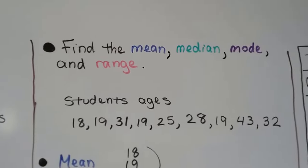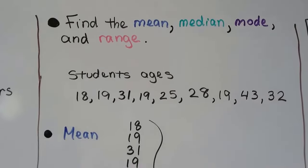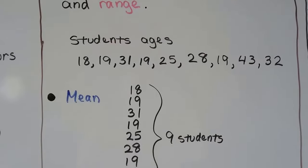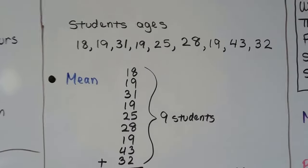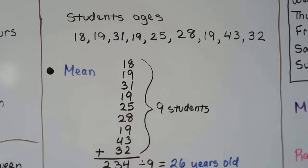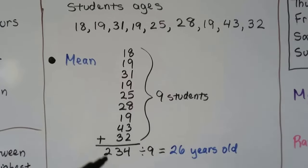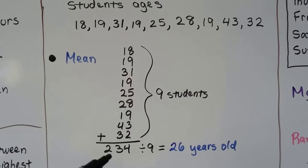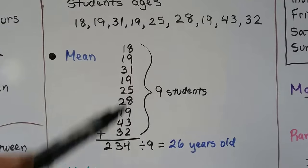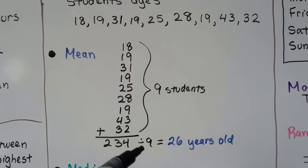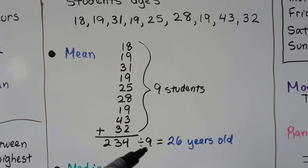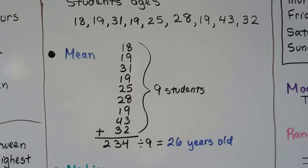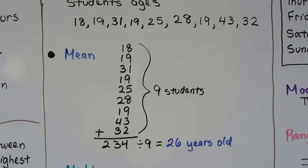Find the mean, median, mode, and range. We have some students' ages here. We have 9 students. To find the mean, we just add up all of these numbers, and because there's 9 students, we divide the sum by 9. 234 is the total of all of these numbers. We divide it by the 9 because there's 9 numbers, 9 students, and we see that the mean is 26 years old.